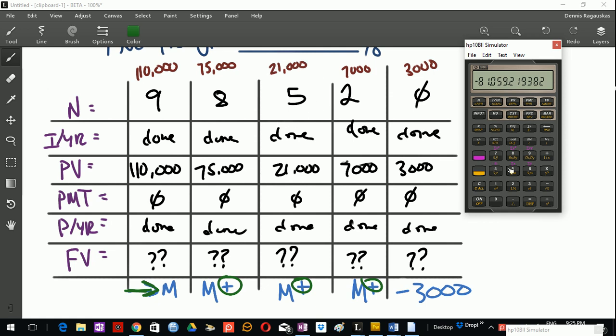Third draw is 21,000 over five compounding periods. So I'll go 5N, 21,000 PV. Press future value. And I get to $22,000. So I'll press M plus again.